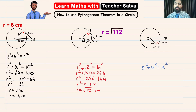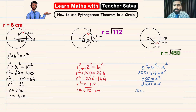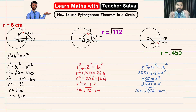So we have 15² + 15² = x². That gives us 225 + 225 = x², so 450 = x², and x = √450. Again, I'll leave it as a square root — do not forget the unit — so x = √450 centimeters.